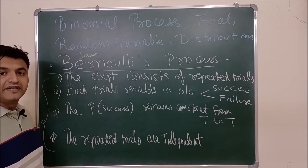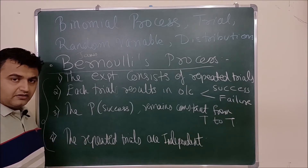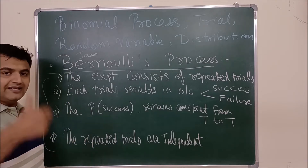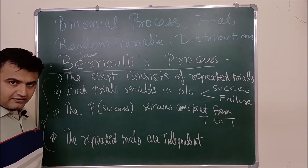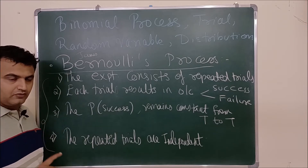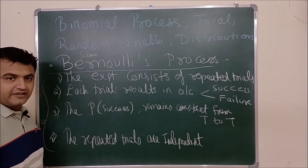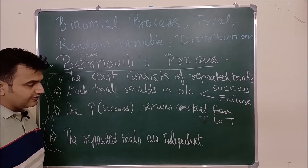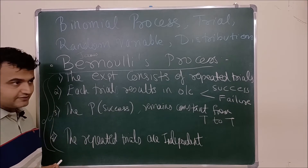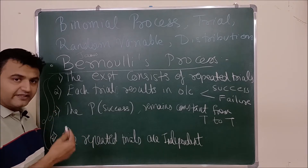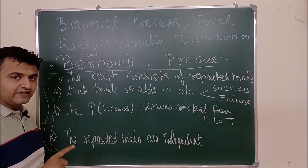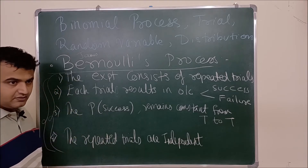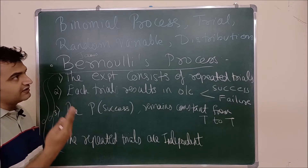And the repeated trials are independent — the outcome of one trial does not affect the next trial. Like if I am tossing a coin and it lands heads, will that previous outcome affect the next trial outcome? No. So the trials are independent. If you have a process that satisfies these four properties, then such a process is called a Bernoulli process. What is a Bernoulli trial? You keep on repeating them. Tossing a coin once is one trial, tossing it a second time is the second trial, tossing it a third time is the third trial.